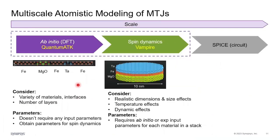At the left side here, we have ab initio modeling — DFT — which can be performed with the QuantumATK software. A user can consider a variety of materials, interfaces between materials, and vary a number of layers without the need of input parameters. Instead, ab initio modeling can provide input parameters for high-level atomistic spin dynamics simulations, which can be performed with Vampire software.